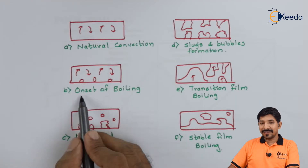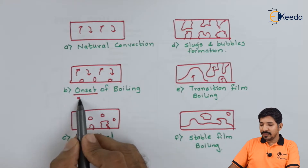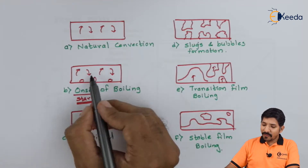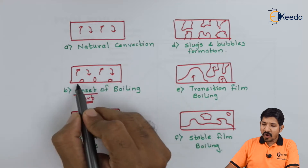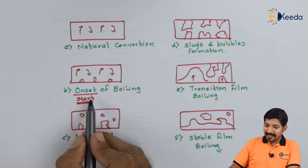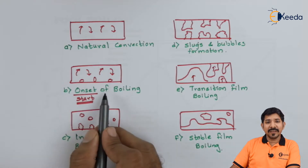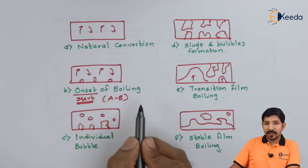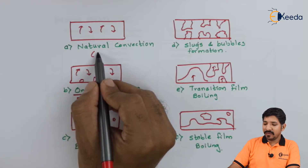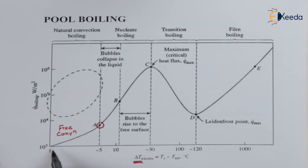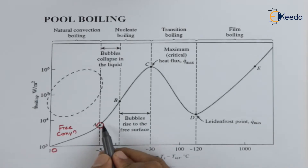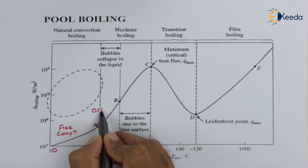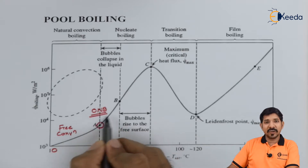Next comes the onset of nucleate boiling — onset meaning the start of nucleate boiling. Small bubbles will form on the surface, but in this region the bubbles will never detach from the surface. This region is from A to B. So O to A is free convection, and A to B is the onset of nucleate boiling.